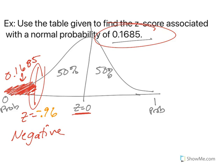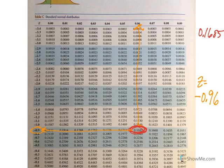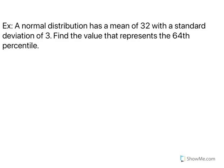So if I go back here, negative 0.96, that should make sense because it's negative. Let's do another one. A normal distribution has a mean of 32 with a standard deviation of 3. Find the value that represents the 64th percentile. We have a mean of 32, standard deviation of 3, and a 64th percentile. And we need to find the value. So x is what we're trying to find.